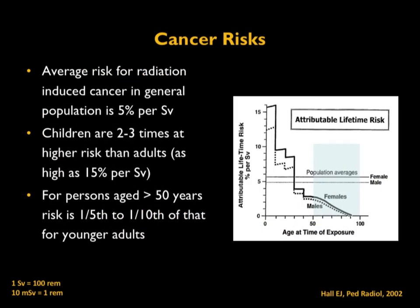One of the key risks is radiation-induced cancer risk. This graph shows attributable lifetime risk versus age at time of exposure. For most radiation protection purposes, we use a constant risk factor of 5% per sievert—noting that sievert is a very large quantity; in imaging we only talk about millisieverts, which is one-thousandth of a sievert. In reality, there is a slightly different effect for different age groups. Children are at 2 to 3 times higher risk than adults, while for persons older than 50, the risk is 1.5 to 1/10 of the adult risk. This is why the right word is to 'optimize' dose, not simply 'lower' it—the dose should be the right dose for the imaging to be done.